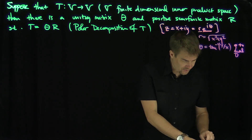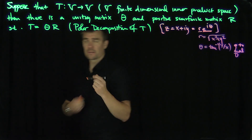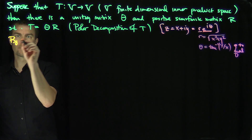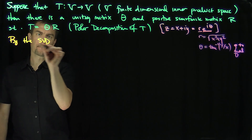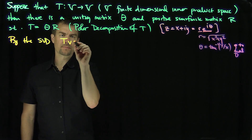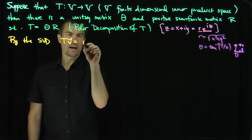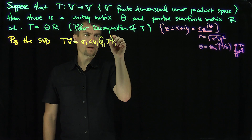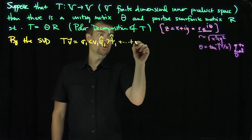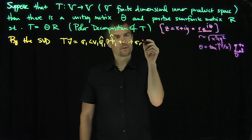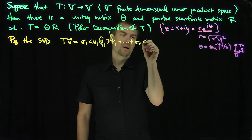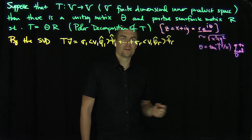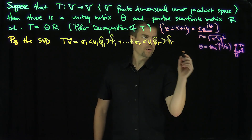So how do we do this? The idea is to use the singular value decomposition. By the SVD, I can write T of any vector V as: σ₁⟨V, φ̂₁⟩ψ̂₁ + ... + σ_R⟨V, φ̂_R⟩ψ̂_R, where R represents the rank of the operator T.